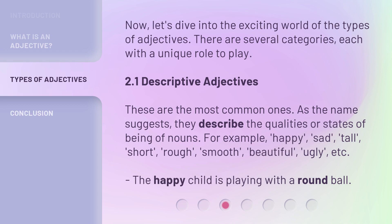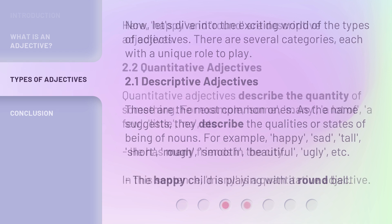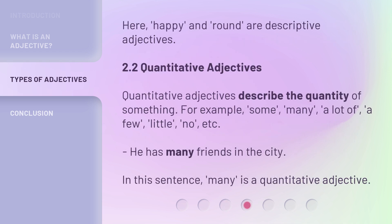For example: happy, sad, tall, short, rough, smooth, beautiful, ugly, etc. The happy child is playing with a round ball. Here, happy and round are descriptive adjectives.